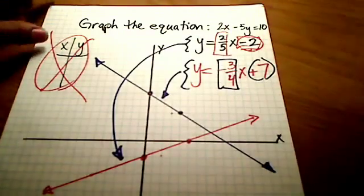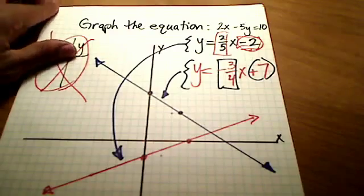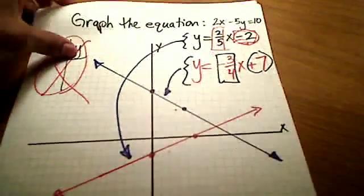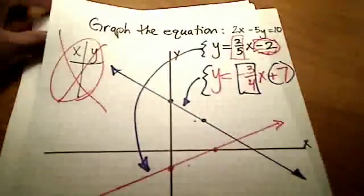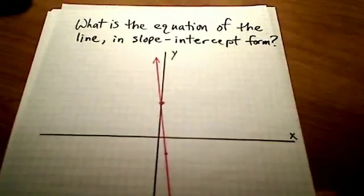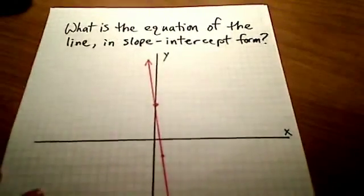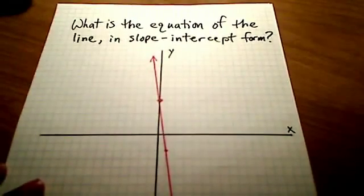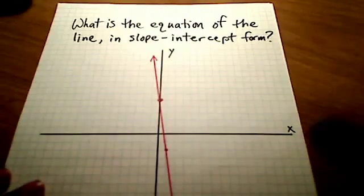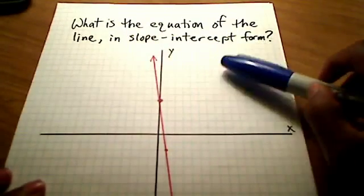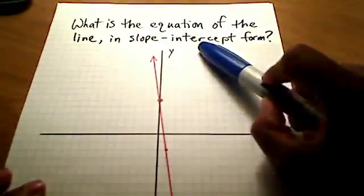Now one more thing I want to show you. What if we play the game slightly backwards? What if I give you the graph and I ask you, what's the equation? We could do that too. My math lab does that sometimes to you, or the homework might do this to you. So what if I give you the picture and I ask you to find the equation of the line in slope-intercept form?